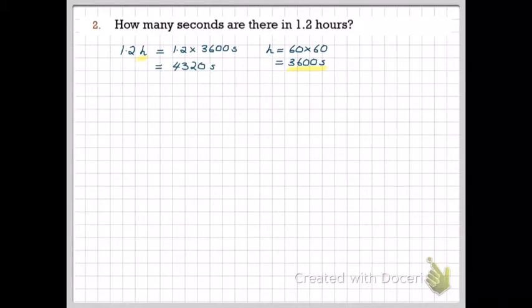And once again, to put it in scientific notation, we need to move the decimal point three places to the left, which is the same as multiplying 4.32 by 10 to the power of 3.